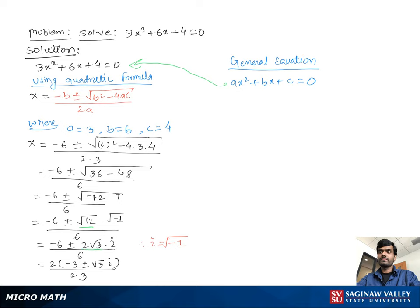Now 2 times 3 is 6, so 2 cancels out, we get x equal to negative 3 plus minus square root 3 i over 3.